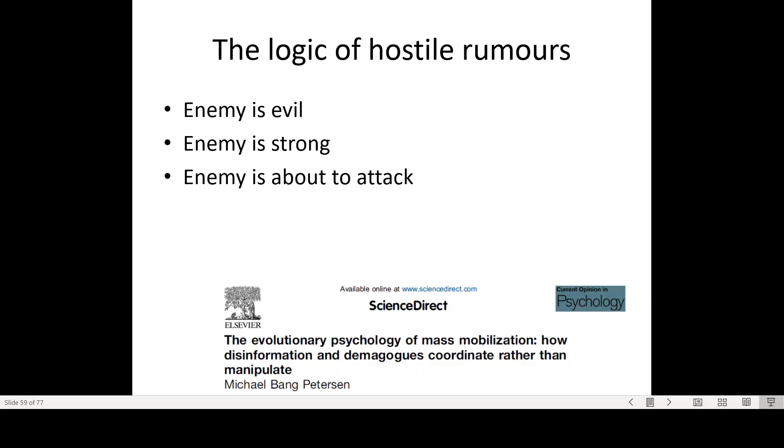In political science, people have talked about the logic of hostile rumors. Typically what hostile rumors and therefore these hostile rumors in a fake news environment entail is that there is an evil enemy, the enemy is strong, and the enemy is about to attack. So from an evolutionary perspective, the best strategy right now probably would be let's run, right? Because there's somebody evil there, that group is really strong, and it's about to attack you. But this actually becomes important because if you have a group that is marginalized, disenfranchised, and ready to fight, you can actually activate these individuals to fight, to support you.